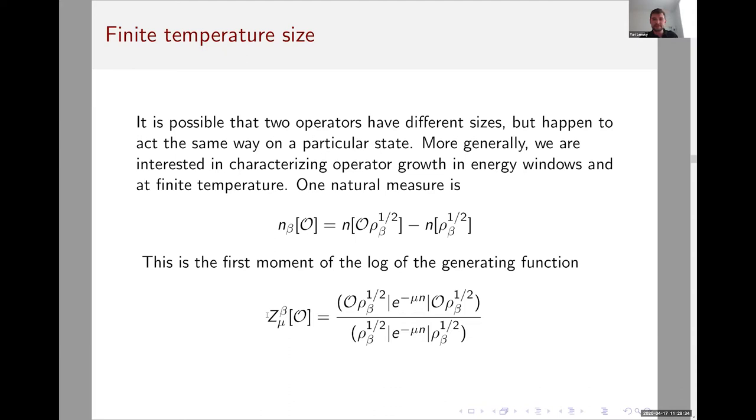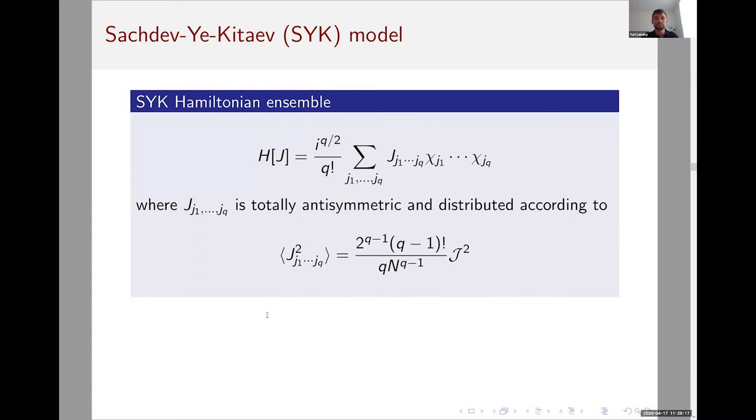We will actually compute in principle the full size generating function. If we take the logarithm of this function and the first derivative and set mu to 0, we get this n_beta of O. In general Z contains much more information than just the average size. So this is the quantity we'll compute. To give a map of the remainder of the talk, we'll compute this quantity in the strong coupling regime of SYK, and then we'll extend our boundary result in SYK. We'll write it in such a form that we can use it to learn something about the size of reconstructed bulk operators in the dual of SYK, or in the putative dual of SYK.